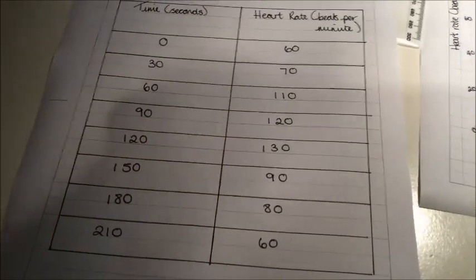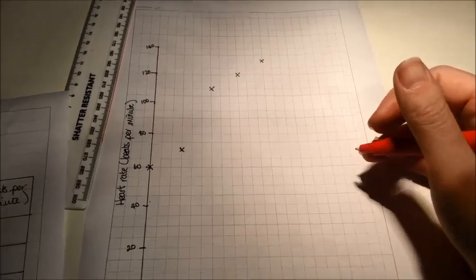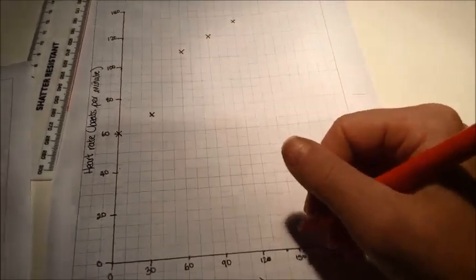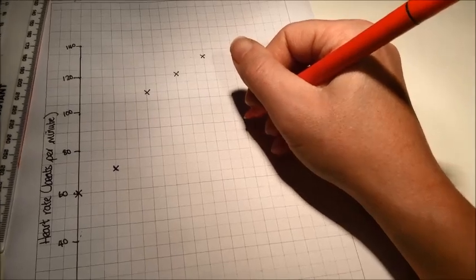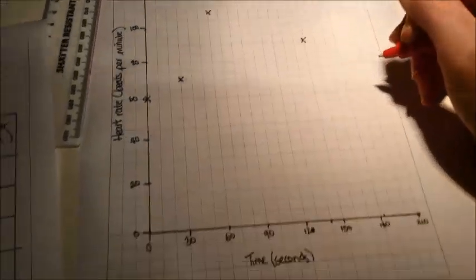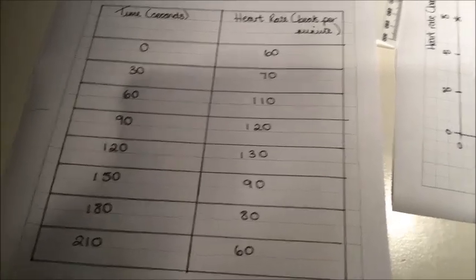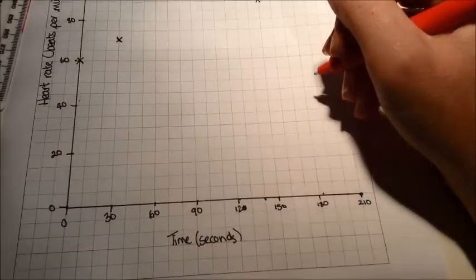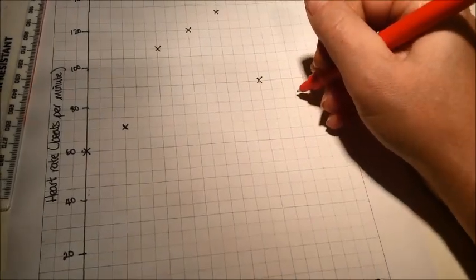At 150 seconds, my heart rate was 90, so I must have finished doing my exercise now and started to calm down. And at 180 seconds, my heart rate was 80 beats per minute. 180, go up to 80 beats per minute.